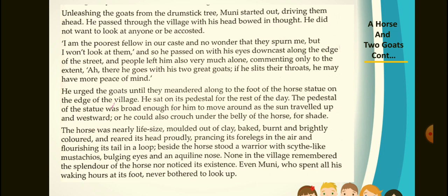The pedestal of the statue was broad enough for him to move around as the sun travelled up and westward, or he could crouch under the belly of the horse for shade. The horse was nearly life-size, moulded out of clay, baked, burnt and brightly coloured, and reared its head proudly, planting its four legs in the air and flourishing its tail in a loop. Beside the horse stood a warrior with scythe-like mustachios, bulging eyes and an aquiline nose. None in the village remembered the splendour of the horse nor noticed its existence. Even Muni, who spent all his waking hours at its foot, never bothered to look up.